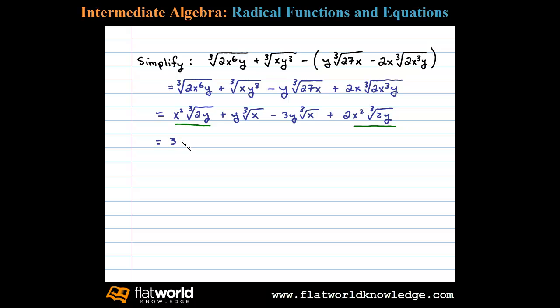...with 3x squared times the cubed root of 2y, and then y times the cubed root of x minus 3 times y times the cubed root of x. These are like terms and that leaves us with minus 2y times the cubed root of x.